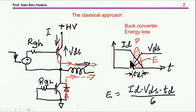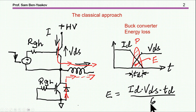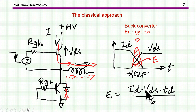The losses are due to the voltage and current overlap, and the integral of this product is the energy loss. Because this goes linearly down and linearly up, we have a second-order equation. When we integrate it, we come up with this expression. Notice that there is a sixth in the denominator, not two as you'll find in many places — which is incorrect, because the two assumes a triangular waveform for the power, which is not the case. So the energy loss is a function of the current, the voltage, and the duration of this time. This is the traditional way of estimating the turn-off loss.